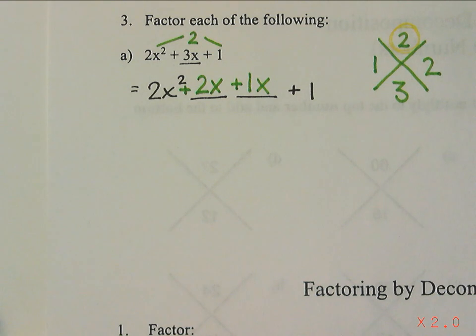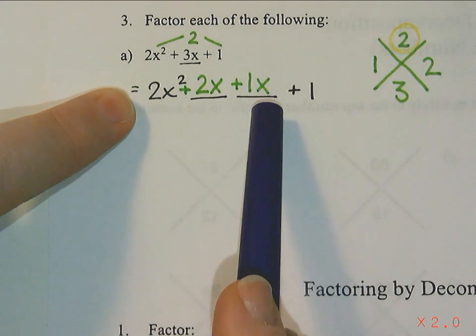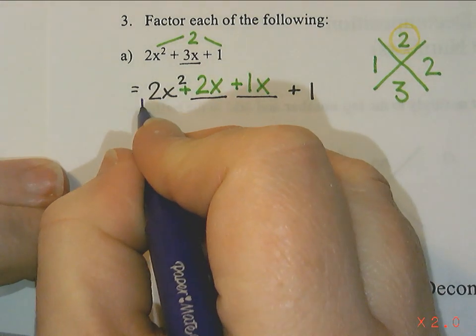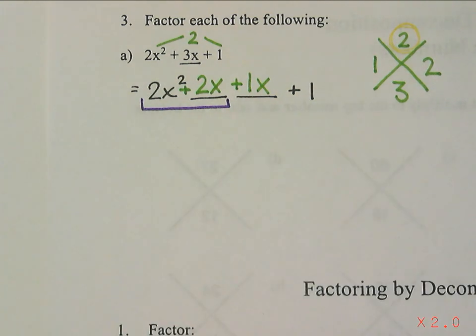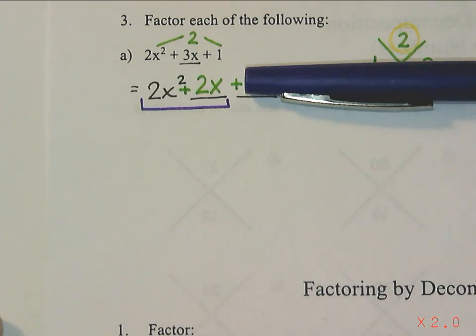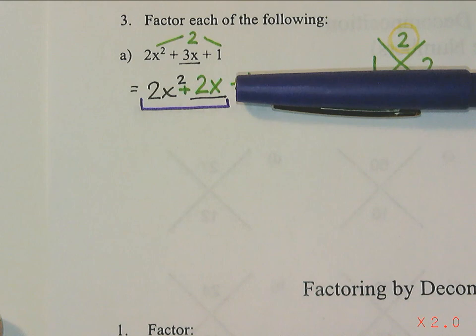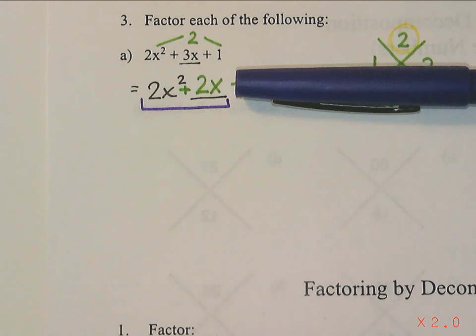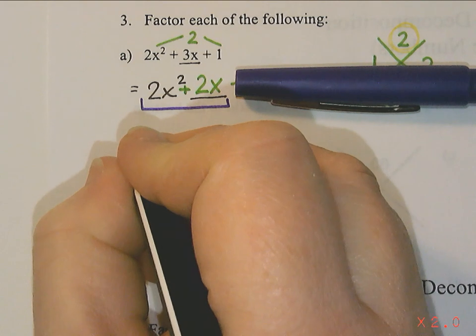Now from here we are going to factor by grouping. Once I have 4 terms I should be able to try to factor by grouping. So I'm going to start by looking at the first two terms. We're going to ignore the last two. We want to see if we can make a multiplication question that gives me an answer of 2x² + 2x. So I want to try to see if there's something that divides into both.